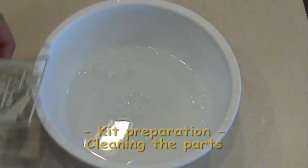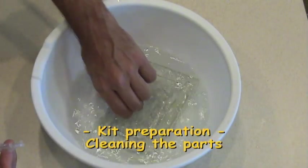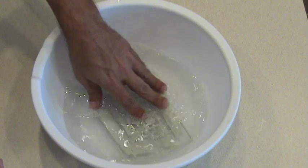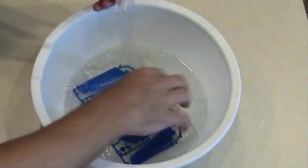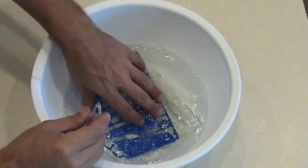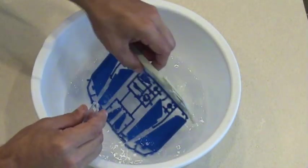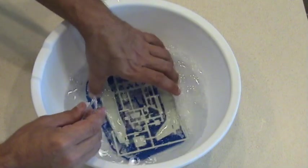It is very important to clean the plastic parts in a mix of water and mild soap to remove any residue of oil from the mold used to make the parts. This process will help the paint adhere better to the surface of the plastic.